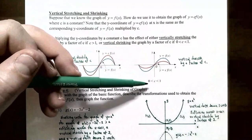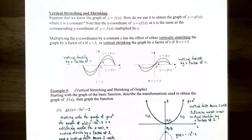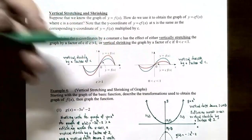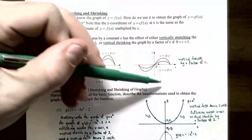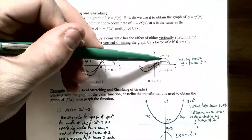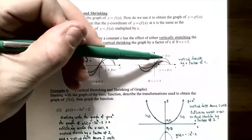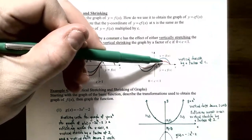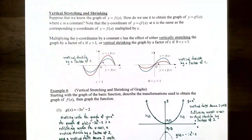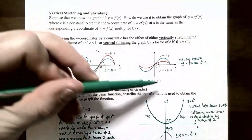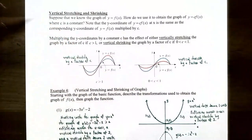On the other hand, if c is between 0 and 1, it's called a vertical shrink by a factor of c. If you start with the graph of y = f(x) and multiply all the y values by c where c is less than 1, the y value is actually getting smaller. Even if the y value is negative, multiplying by c where c is less than 1 will give a smaller negative number, getting closer to the x-axis. So this is called a vertical shrink by a factor of c — the graph shrinks towards the x-axis.